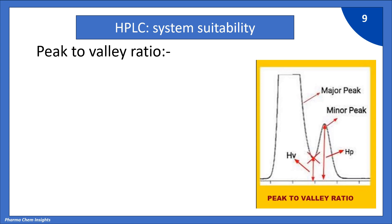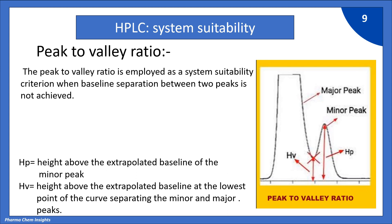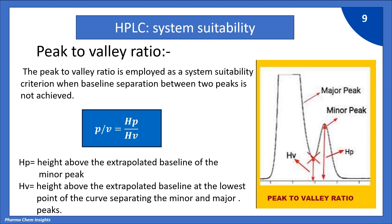Next parameter: peak to valley ratio. You can see the figure for this. The peak to valley ratio is employed as a system suitability criterion when baseline separation between two peaks is not achieved. The formula is: Hp / Hv, where Hp represents the height above the extrapolated baseline of the minor peak, and Hv represents the height above the extrapolated baseline at the lowest point of the curve separating the minor and major peaks.